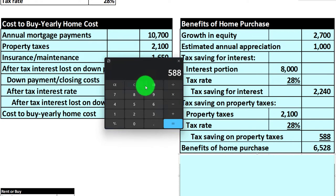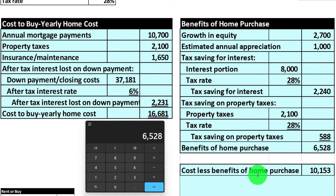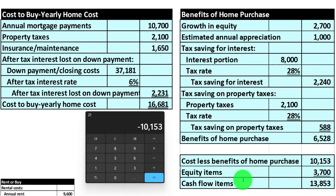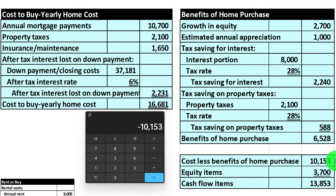So the total benefits: growth in equity of $2,700 plus $1,000 estimated appreciation plus $2,240 in interest tax savings plus $588 in property tax savings comes to $6,528. Taking the cost to buy of $16,681 minus the benefits of $6,528 gives a net cost of $10,153. On a cash flow basis, if I add back the equity components — the $2,700 and the $1,000 — to the $10,153, that gets us to a cash flow figure of $13,853.